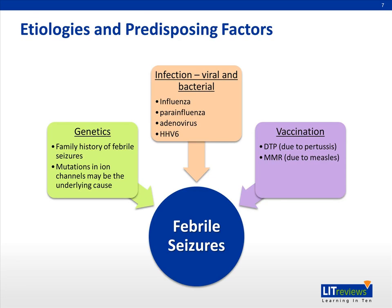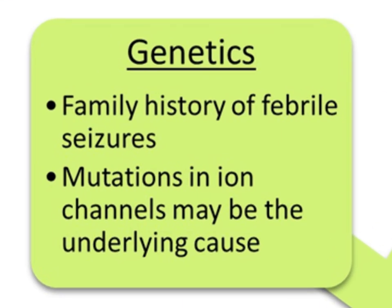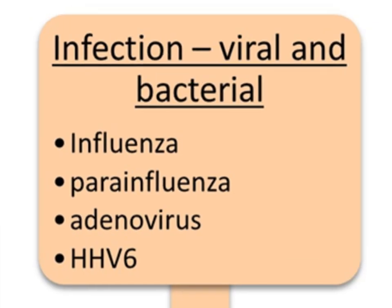It is unclear how a raised body temperature can lead to a seizure. Previous studies on the etiology of febrile seizures have produced inconclusive results. However, based on these studies, febrile seizures are likely due to a combination of genetic and environmental factors. There is often a family history of febrile seizures, and several genes have been identified that potentially play important roles. Polymorphisms or mutations in ion channels have been implicated as the underlying cause. Both viral and bacterial infections can lead to febrile seizures; however, viral causes are more often implicated, likely because of their higher incidence among children in clinical practice.